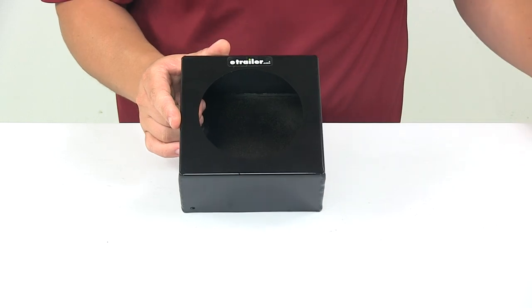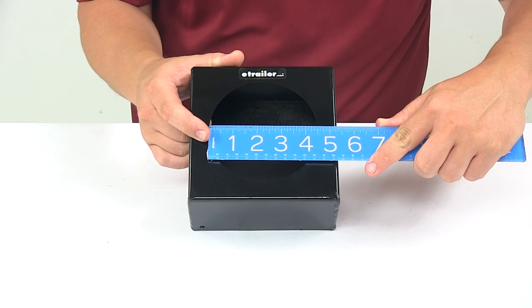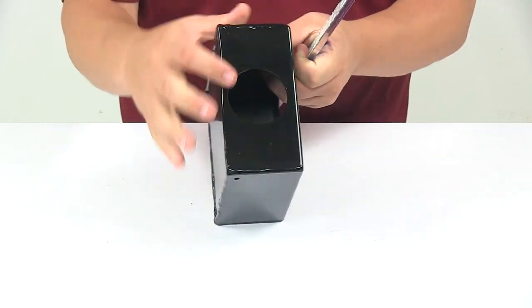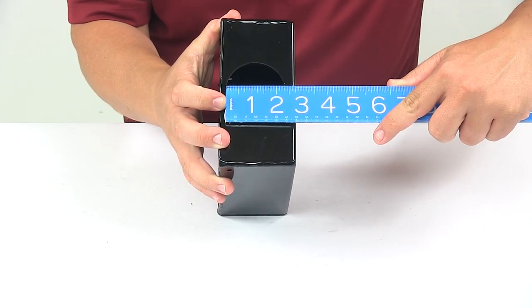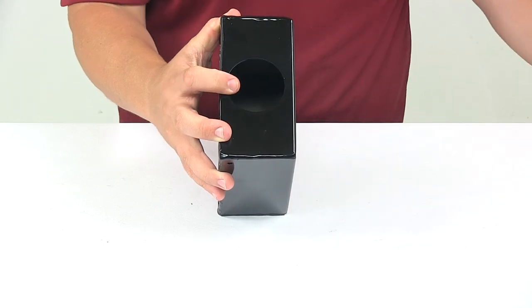The cutout here on the front face measures about four and a half inches in diameter. The cutout for the side light measures two and five sixteenths of an inch in diameter.